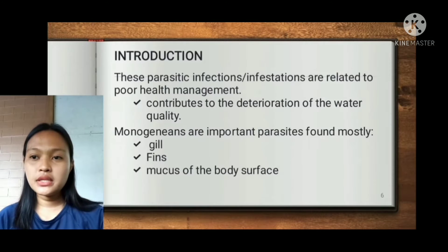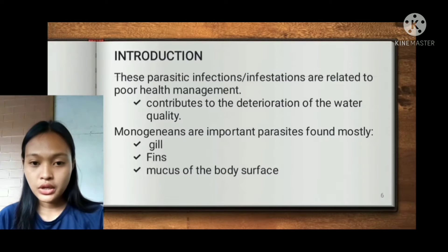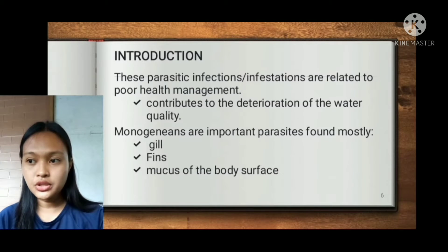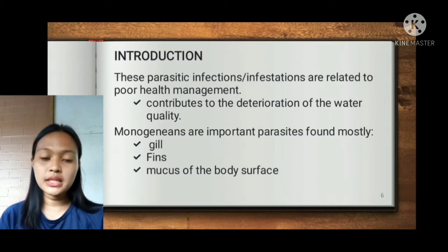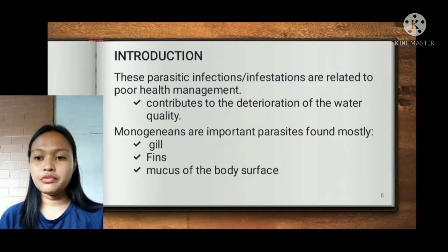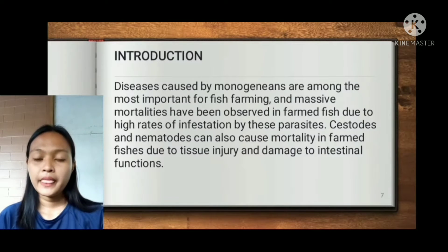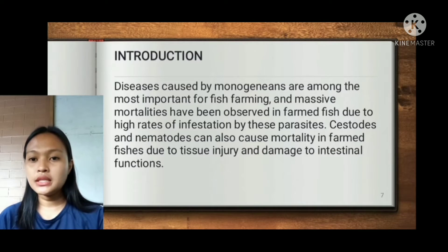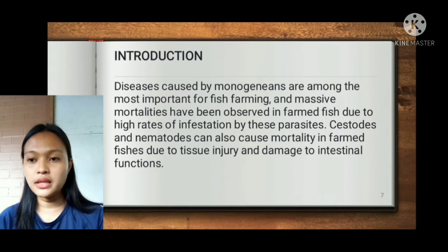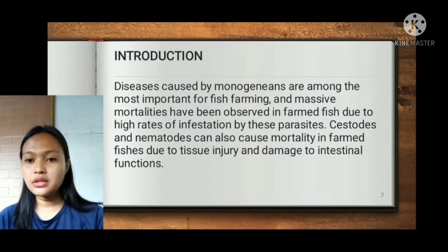These parasitic infections or infestations are related to poor health management and contribute to the deterioration of water quality. Monogeneans are important parasites found mostly in the gills, fins, and mucus of the body surface. Diseases caused by monogeneans are among the most important for fish farming, and massive mortalities have been observed in farmed fish due to high rates of infestation by these parasites.